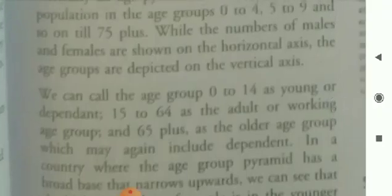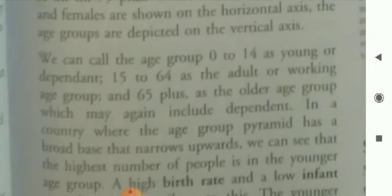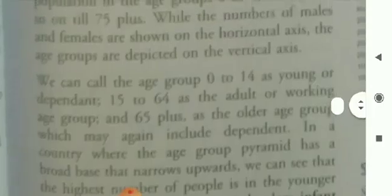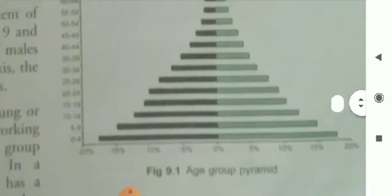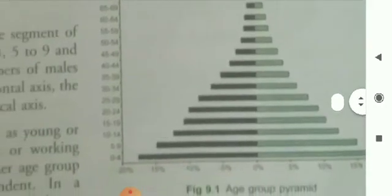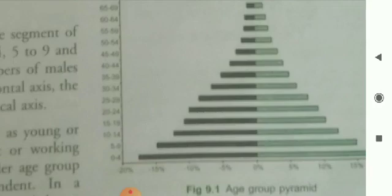The age structure explains the percentage of a country's population in different age groups. A study of the age structure gives direction to planning and development work in human resources. Normally, an age pyramid shows the segment of population in the age groups 0 to 4, 5 to 9, and so on till 75 plus. You will get the draft here — this is the pyramidal structure of the population composition.